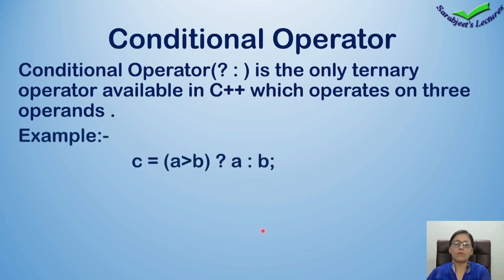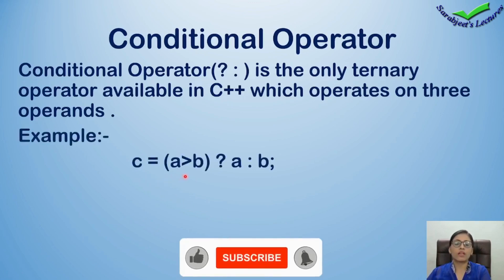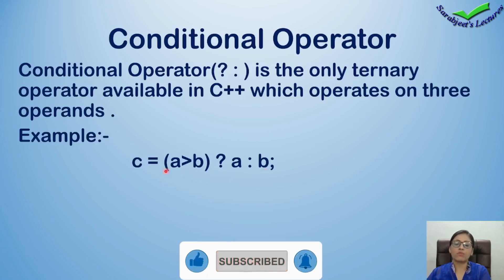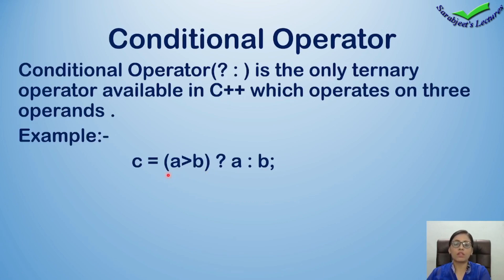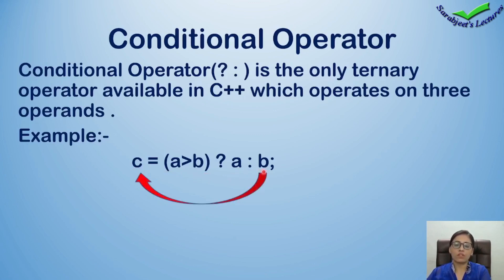Let's see one example. Example mein likha hai: c is equal to a is greater than b, question mark, a, colon, b. Isme hum dho operands ko compare kar rahe hai. It means humne condition build kiya: a is greater than b. Agar yeh condition humari true ho jaati hai, toh a variable — jo humne expression two pe likha hua hai — jo humara true value maana jayega, woh a variable ki jo value hogi, woh c mein jaake store ho jayegi. Agar yeh condition humari false hogi, toh b naam ka jo variable hai, joh b variable mein jo bhi value stored hogi, woh c variable mein jaake store hogi, jo humne left side pe likha hua hai. Tho c variable greatest value ko hold karne wala hai after the comparison of this condition.